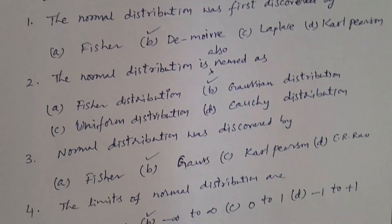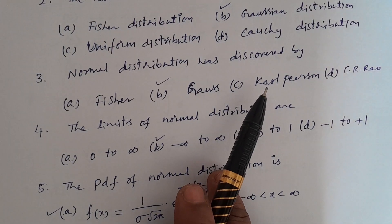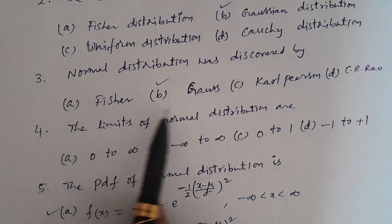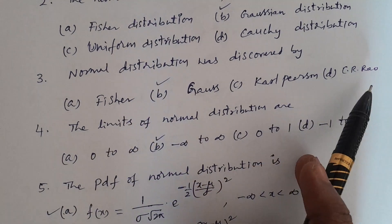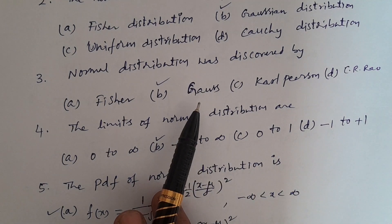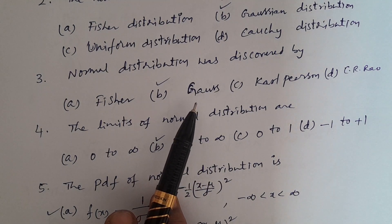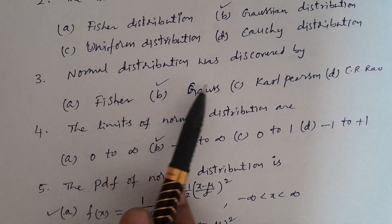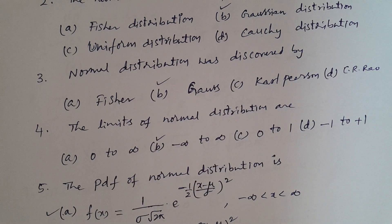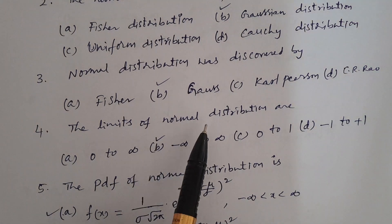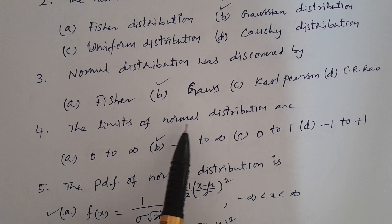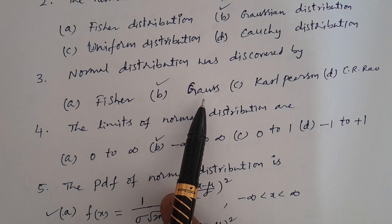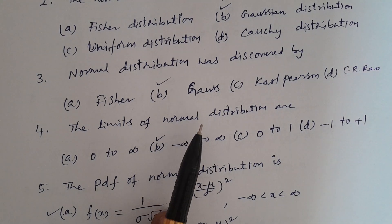Question number three. The normal distribution was discovered by whom? Options: A. Fisher, B. Gauss, C. Karl Pearson, D. C.R. Rao. The answer is Gauss. The distribution is also named Gaussian distribution after him. In Telugu: The answer is Gauss — Gauss discovered the normal distribution.